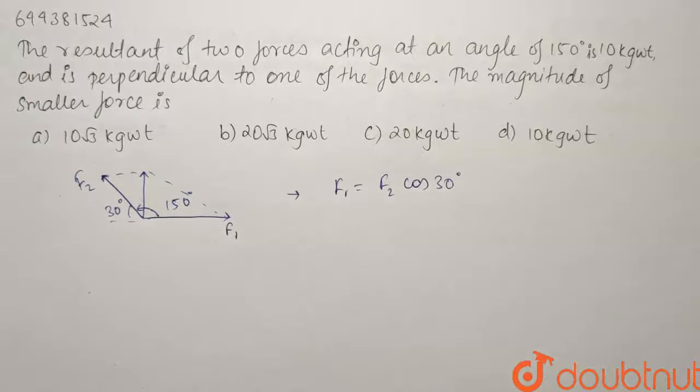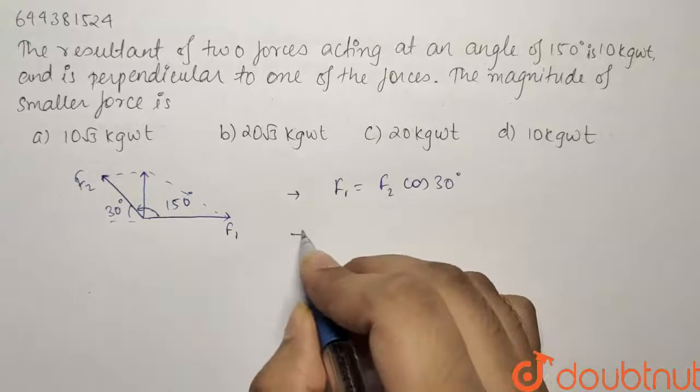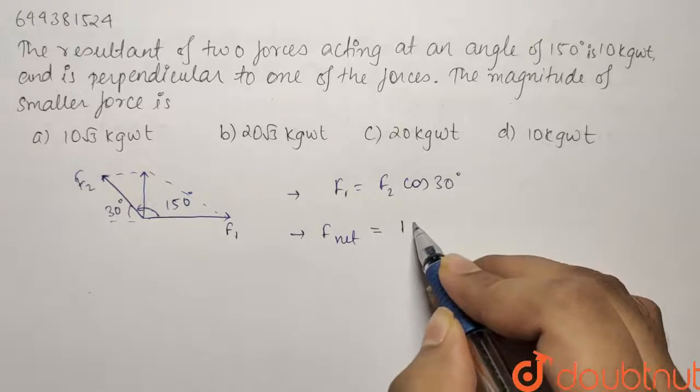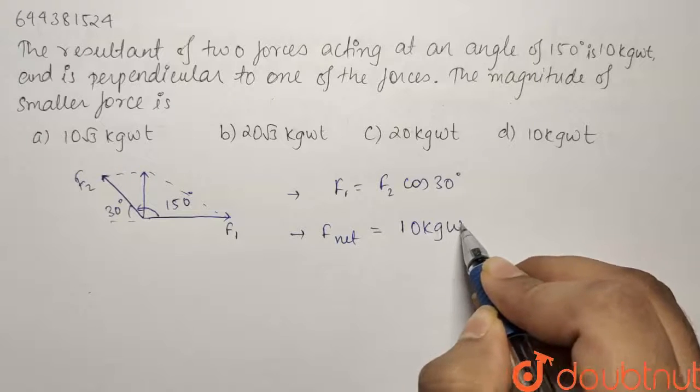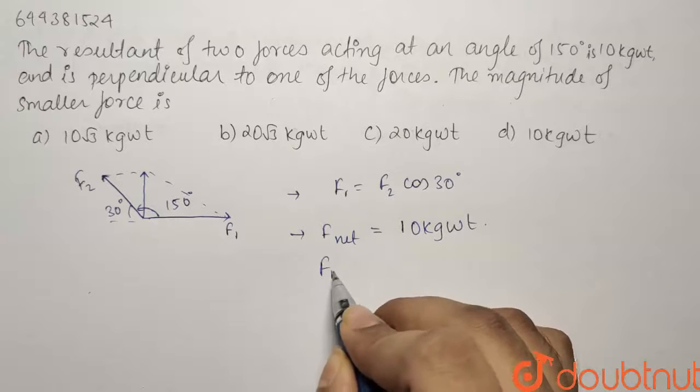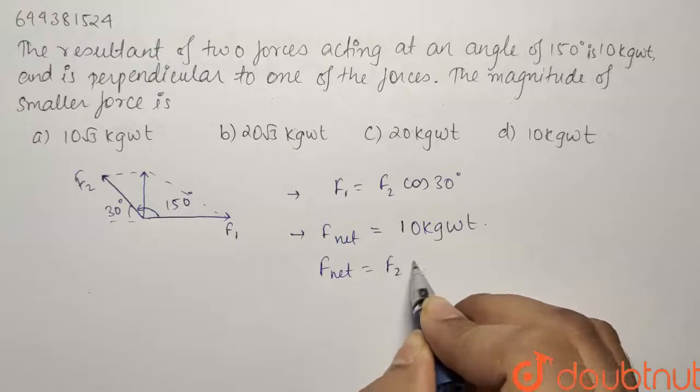What we will have is the value of this net F. So F_net equals 10 kg weight as given in the question. It will be equals to F2 sin 30. So F_net equals F2 sin 30.